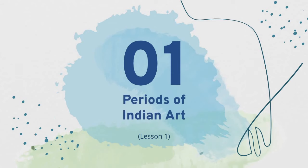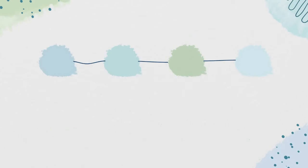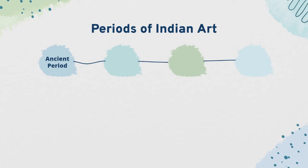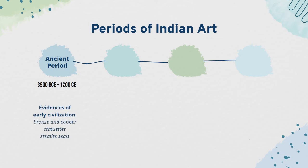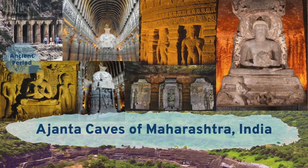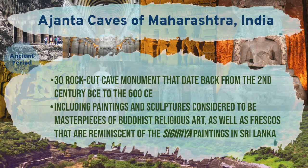Lesson 1: Periods of Indian Art. There are four periods of Indian art. The first one is the Ancient Period, 3900 BCE to 1200 CE. Evidences of early civilization include bronze and copper statuettes and steatite seals. The Ajanta Caves of Maharashtra, India — 30 rock-cut cave monuments that date back from the 2nd century BCE to 600 CE.